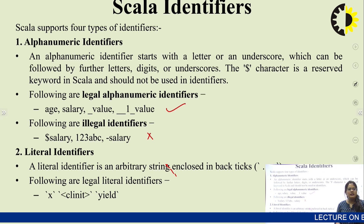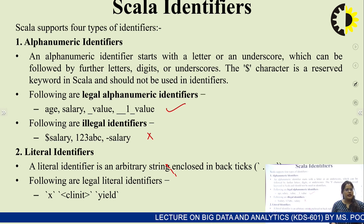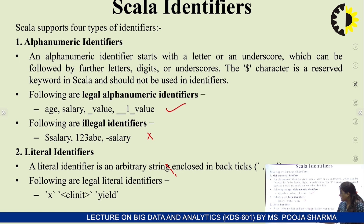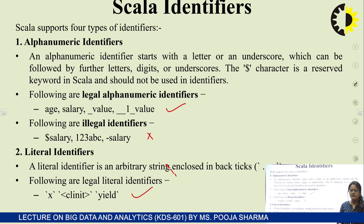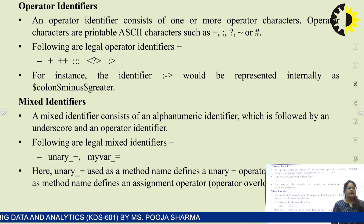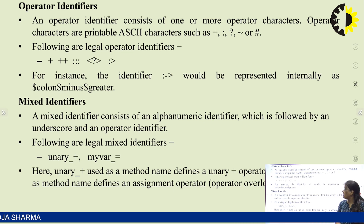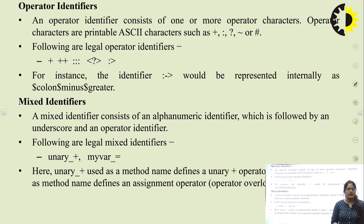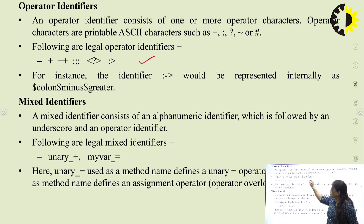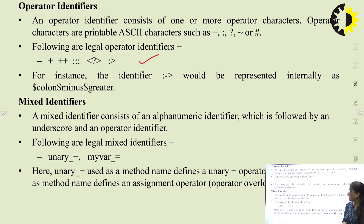The next type is literal identifiers. A literal identifier is an arbitrary string enclosed in back-ticks. Next is operator identifiers. An operator identifier consists of one or more operator characters. Operator characters are printable ASCII characters such as plus (+), colon (:), and question mark (?). Examples of operator identifiers are: ++, :::.